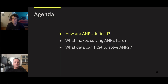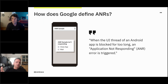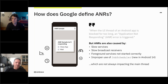Let's start off by talking about how ANRs are defined. There's documentation from Google on this, but it's really not all that easy to decipher, and it's changed a bit over time. The main thing often said is that it's when the UI thread of an Android app is blocked for too long. While that is a true statement, it is not exactly a complete statement. ANRs can be caused by many other things — Google has really expanded this over time. There are services that can be slow to respond, and broadcast receivers that aren't performant.